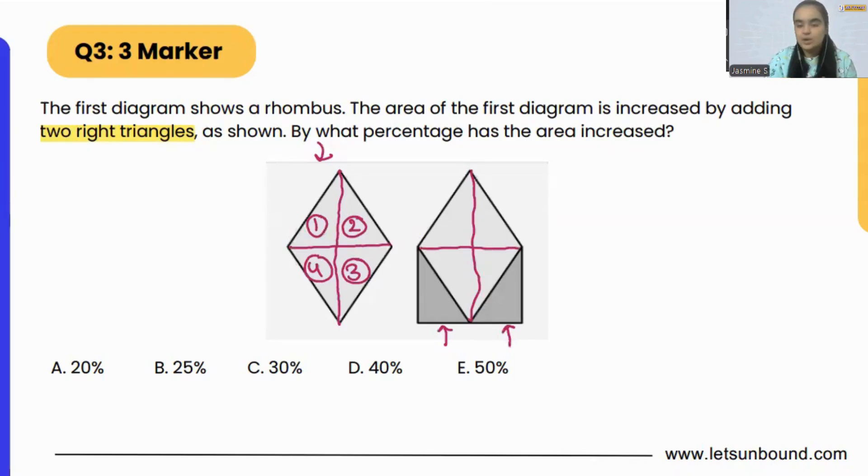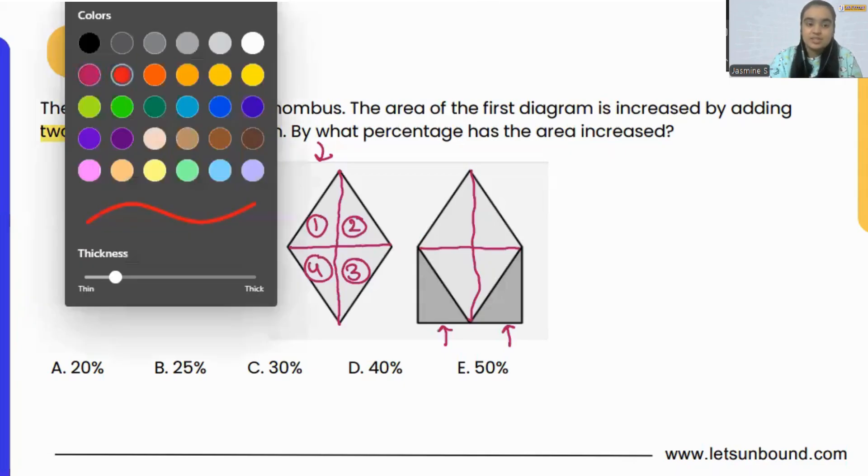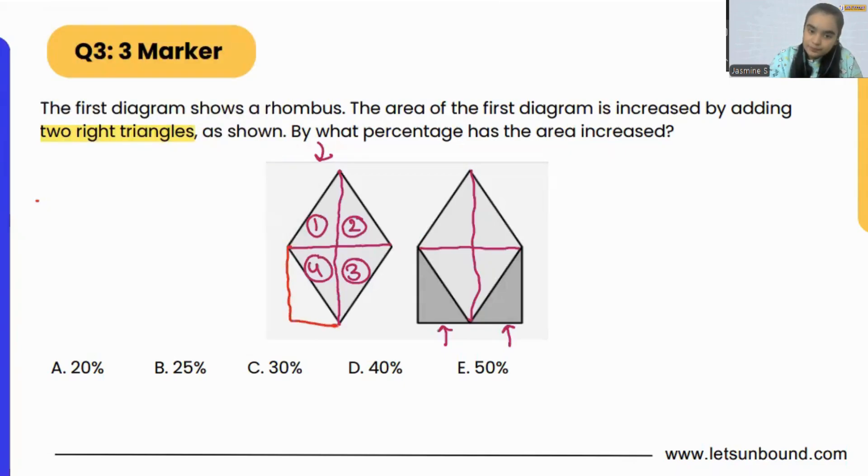So what I did, I split the rhombus by attaching the diagonals, and that's how I got four identical triangles. Now what they are doing is they have attached another two right triangles over here.